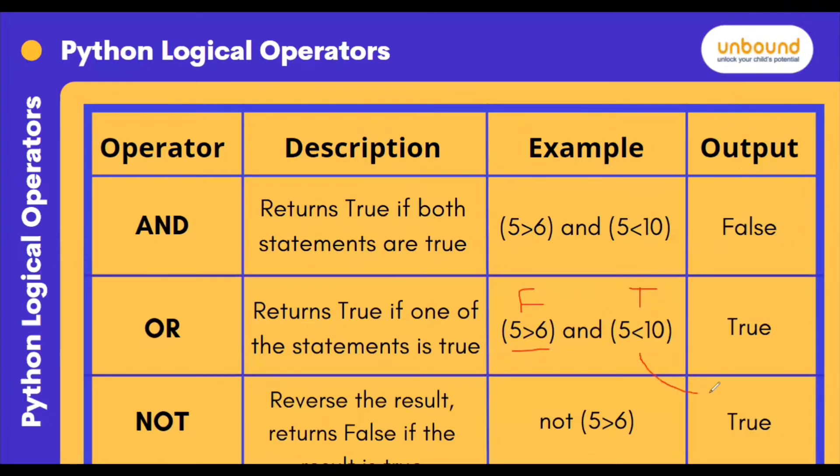But now, unlike the and condition, it gives true here. Why so? Because it says or. So here the requirement changes. The requirement is that one of the statements should be true. If the other one is false, then also it will give the answer as true, because one of the statements got true.